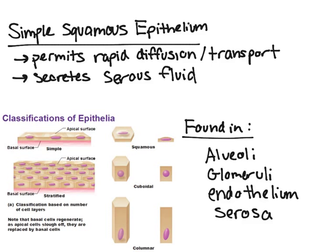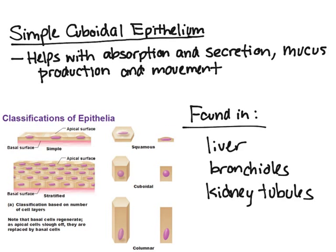Next is simple cuboidal epithelium — remember, cuboidal means square, so it's just one layer of square-shaped cells. This type of epithelium generally helps with absorption and secretion, mucus production, as well as movement. It typically does more secreting than absorbing. It can be found in the liver, the bronchioles, and the kidney tubules.